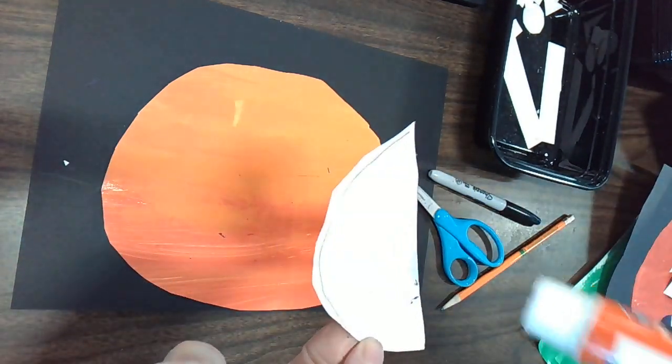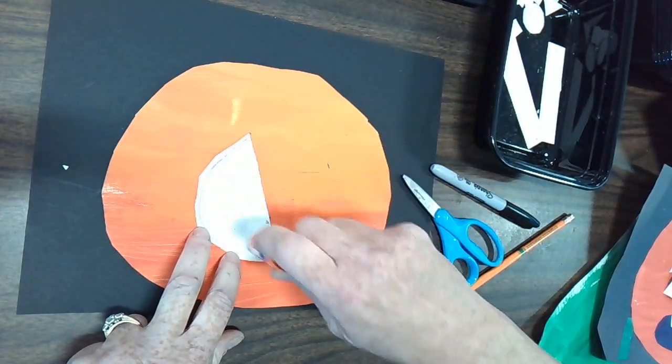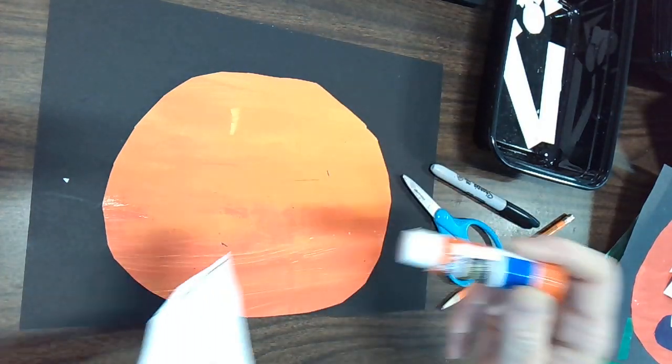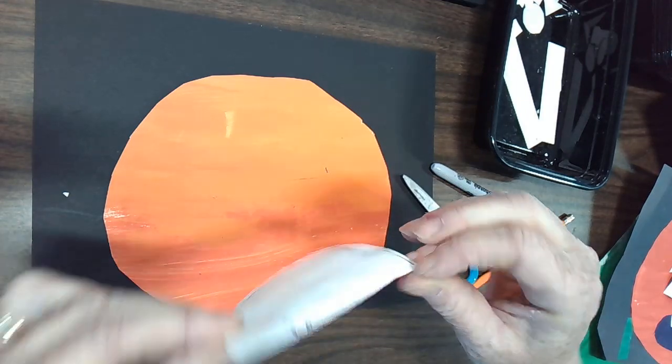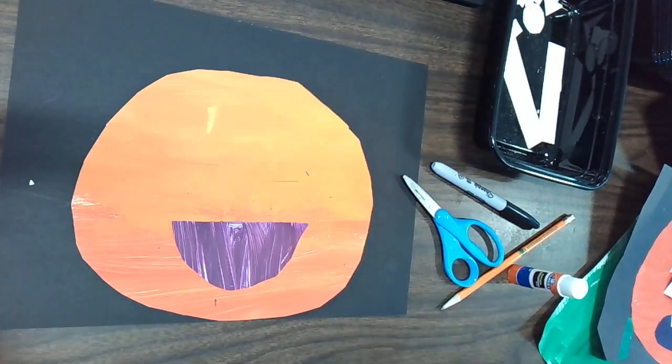Again, I'm going to put the glue on this. It's always best to put the glue on the smaller thing instead of putting the glue right on the pumpkin. This way I know I get it right where it needs to go on the back of the mouth. And I can stick that down.